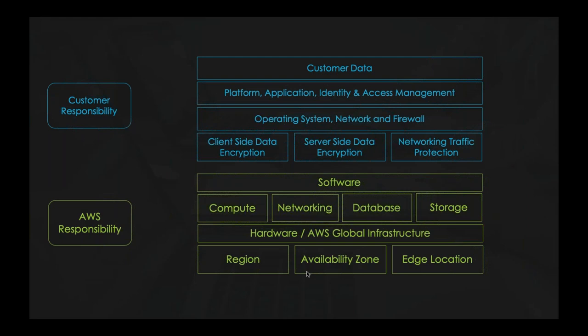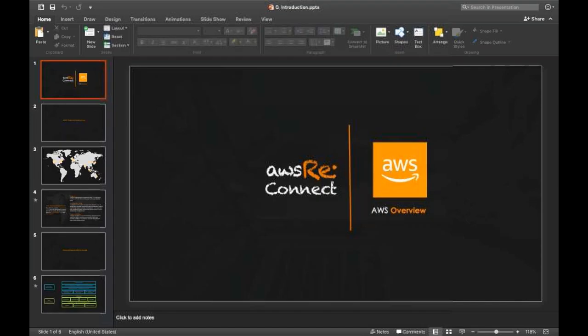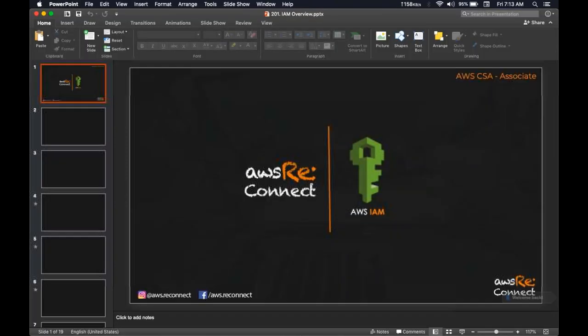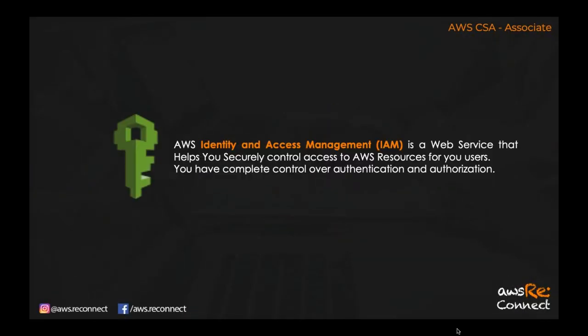That covers AWS and customer responsibilities. Now let's start our first topic: IAM. AWS IAM is a web service that helps you securely control access to AWS resources for your users. You have complete control over authentication and authorization. IAM is a management service from which you — as the head of your organization — can manage whatever team members you have who are going to access your AWS account, providing them the appropriate authentication and authorization to AWS services.